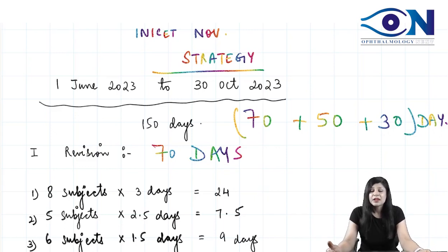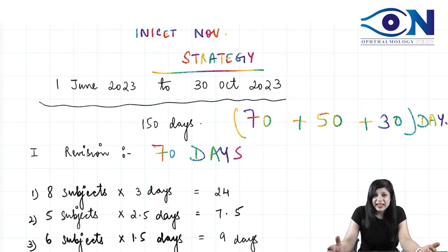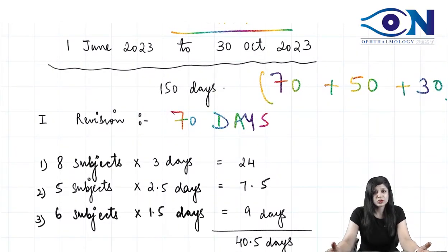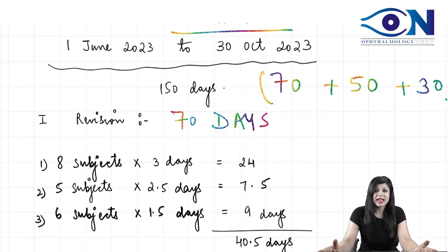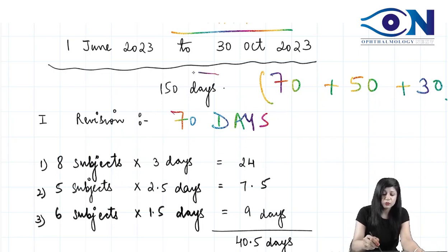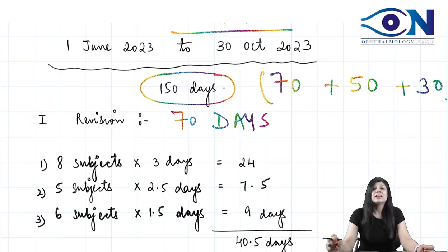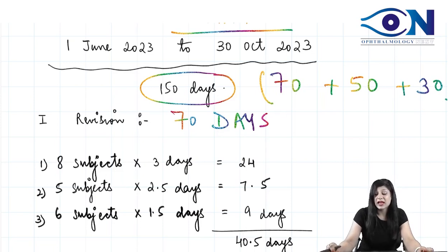For both groups, this will be the plan you were looking for. You will get a direction, a strategy, and ample practice. If you start your preparation from the 1st of June 2023 and your paper is in November, we have time till the 30th of October 2023, which gives us roughly about 150 days.